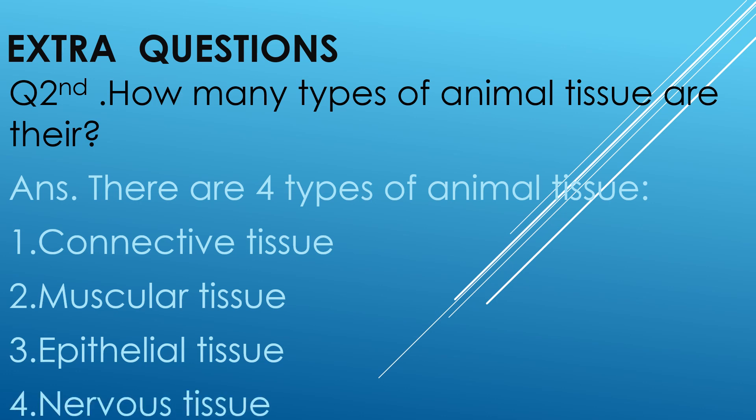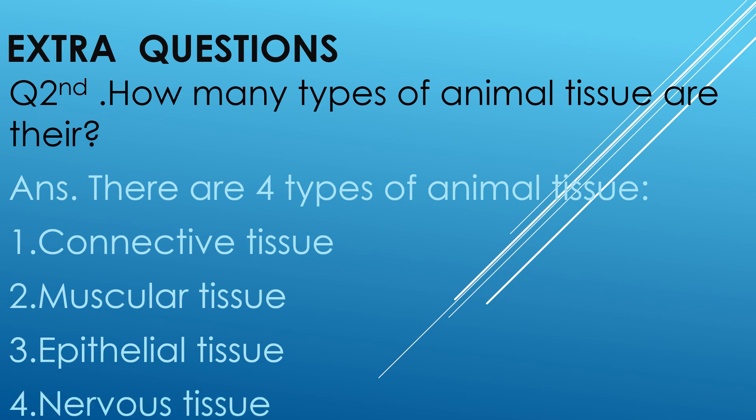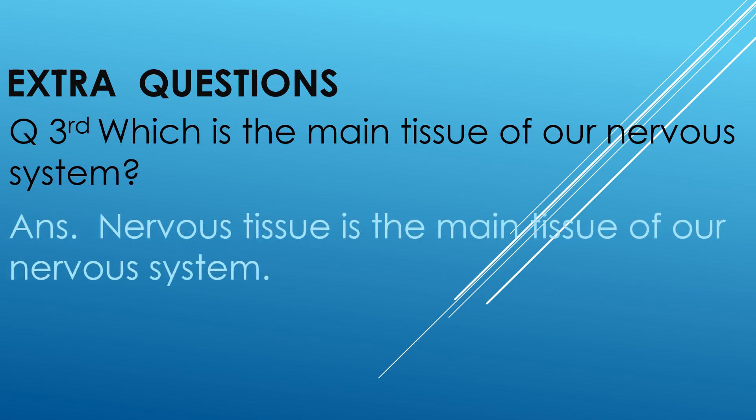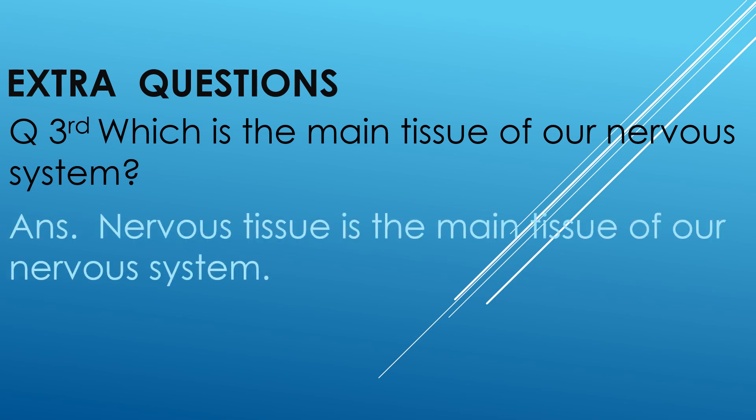Let's discuss question third. Which is the main tissue of the nervous system? The answer is: nervous tissue is the main tissue of our nervous system.